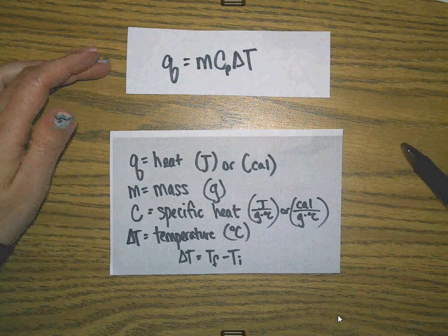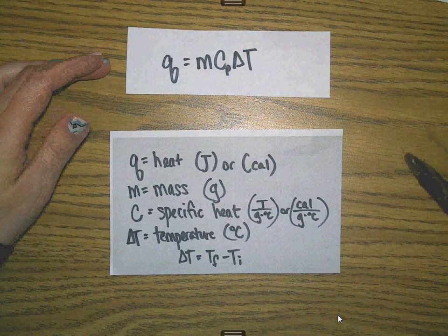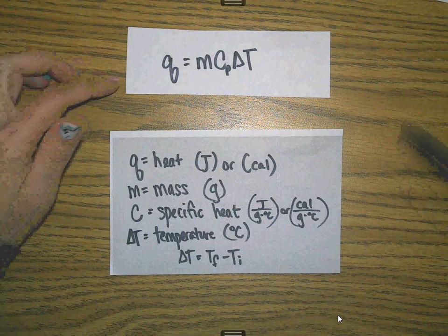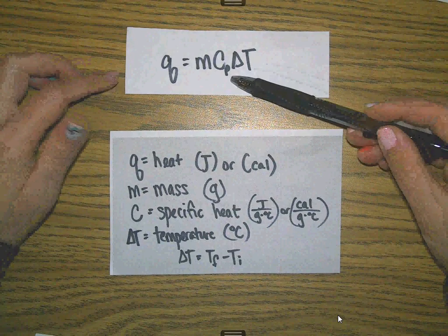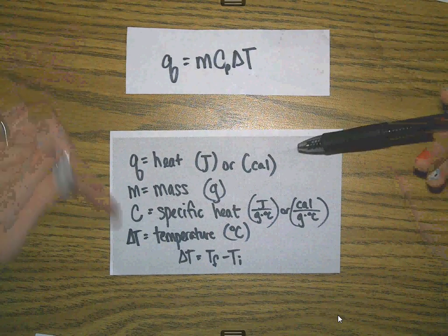Our formula is q is equal to m c delta t. If you're watching with me from the state of North Carolina, then your reference table gives you c sub p, but it still means the same thing as just a plain old c.